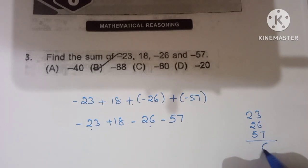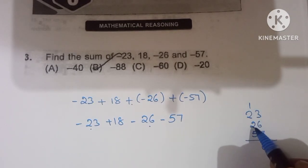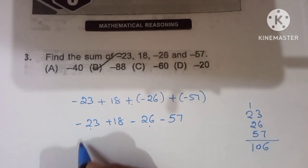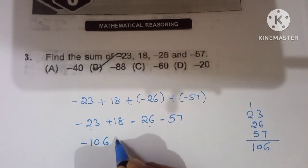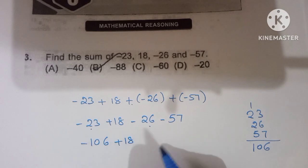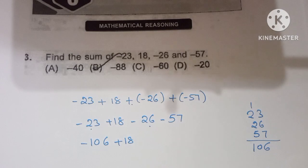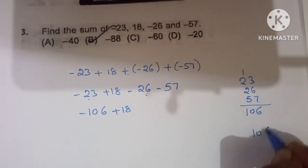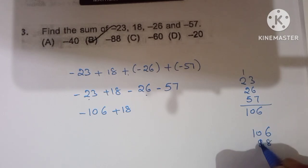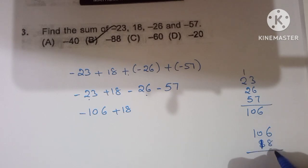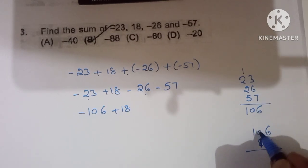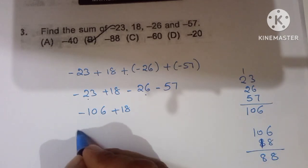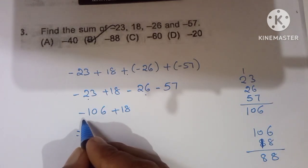9 plus 7 is 16, giving us 106. So minus 106 plus 18. 16 minus 8 is 8 and 9 minus 1 is 8. The greater number has the minus symbol, so the answer is minus 88. Minus 88 is the correct option.